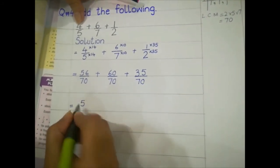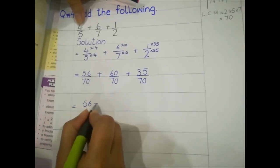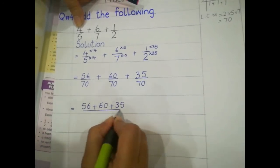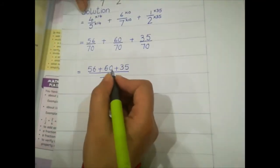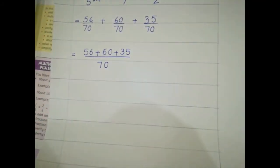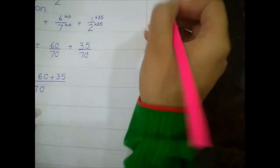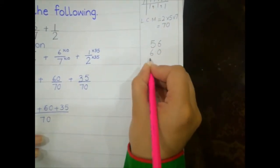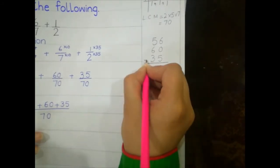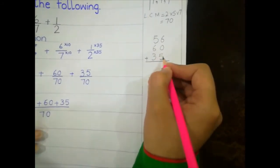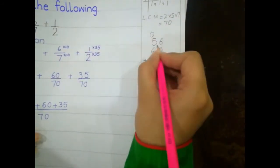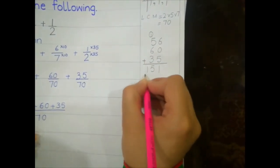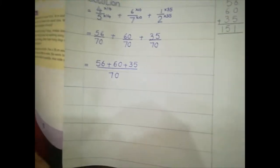Now we join the fractions and write all the numerators over the common denominator: 56 plus 60 plus 35, divided by 70. We add the numerators in the rough work column: 6 plus 0 is 6, plus 5 is 11 — write 1, carry 1. Then 5 plus 1 is 6, plus 6 is 12, plus 3 is 15. So the result is 151 by 70.